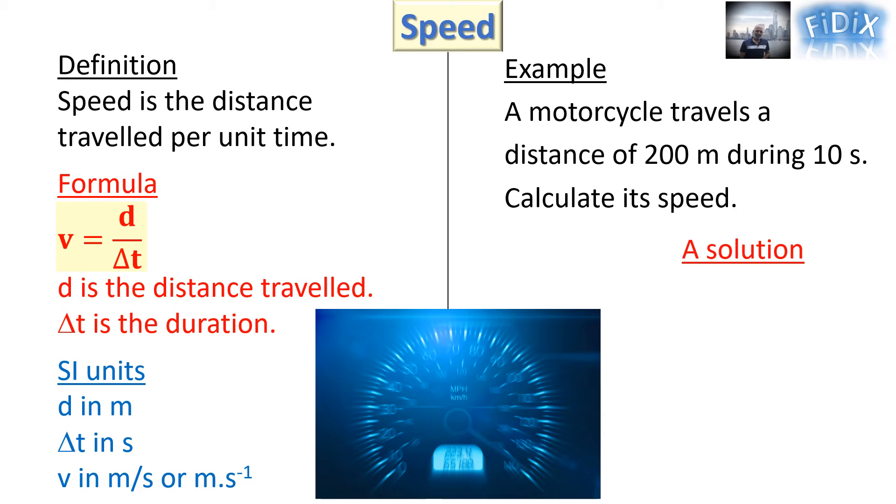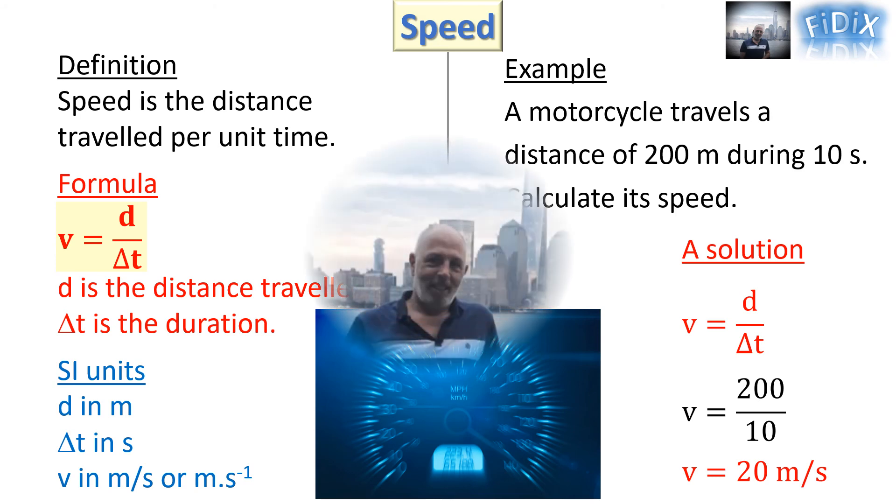To answer this question, we write the formula, replace D and delta T by their values, and get the speed V equals 20 meters per second.